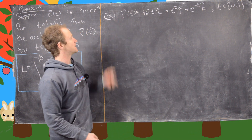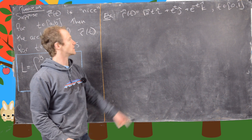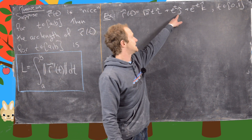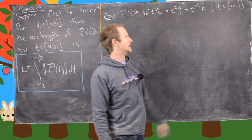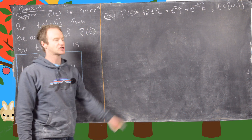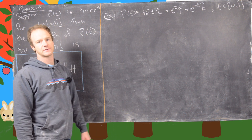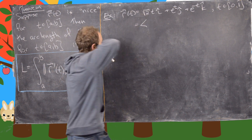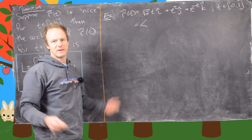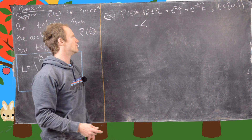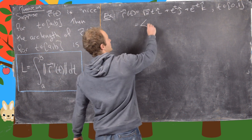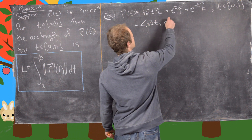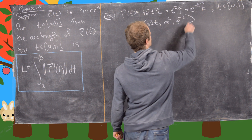So we want to look at this vector-valued function: we have root 2 times t in the i direction, e to the t in the j direction, and e to the minus t in the k direction, over the interval 0 to 1. Let's rewrite this in a more familiar form: (root 2t, e to the t, e to the minus t).